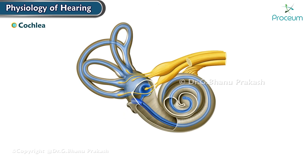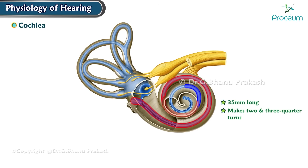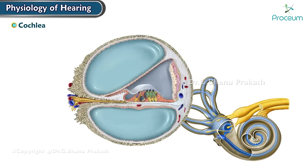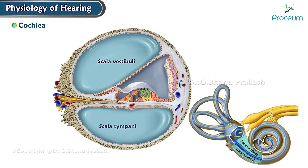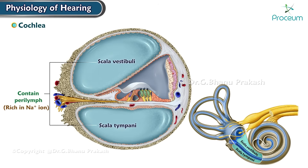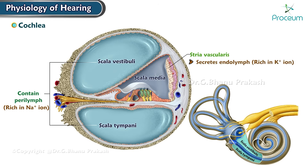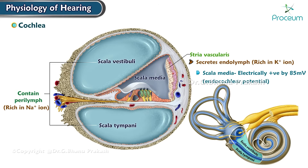Cochlea physiology: the cochlea is 35 millimeters long and makes two and three-quarter turns. The upper scala vestibuli and the lower scala tympani contain perilymph, which is rich in sodium ions. The scala media is the middle cochlear chamber, which has stria vascularis that secretes endolymph, which is rich in potassium ions. Scala media is electrically positive by 85 millivolts relative to the scala vestibuli and scala tympani.